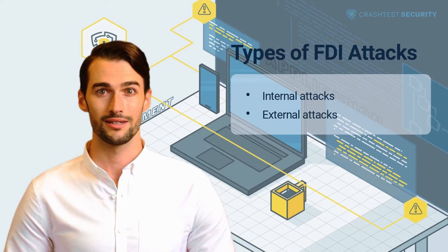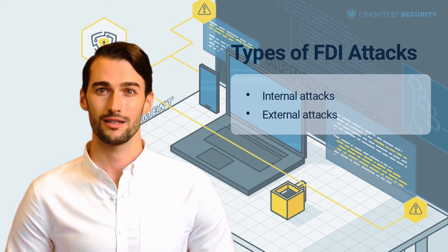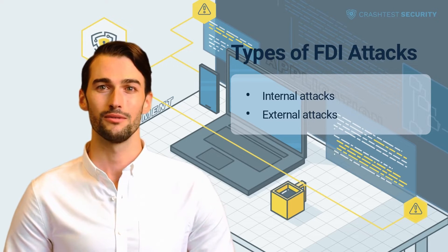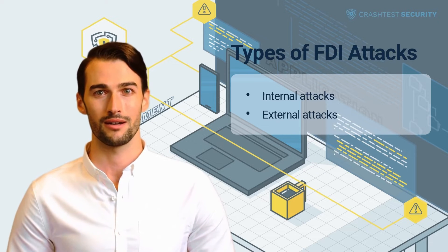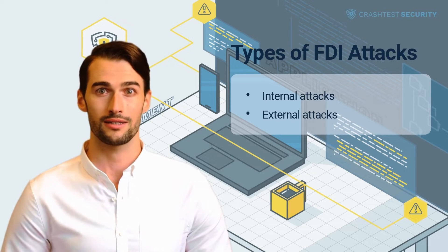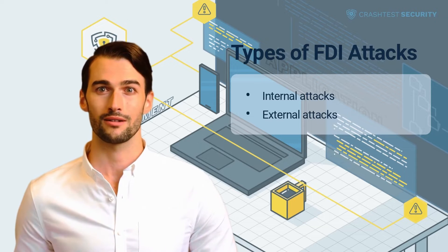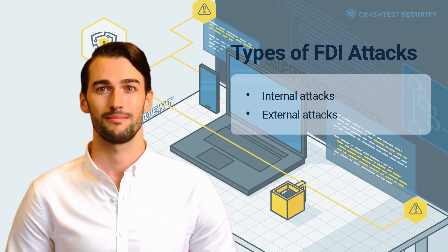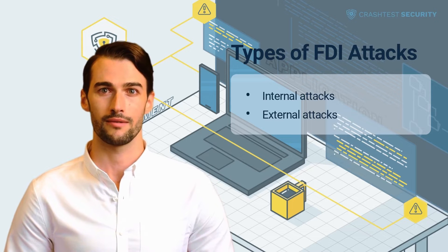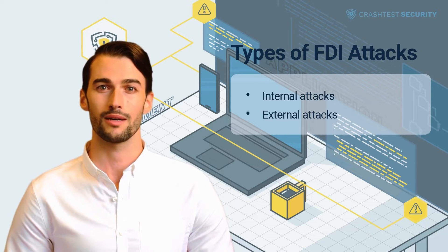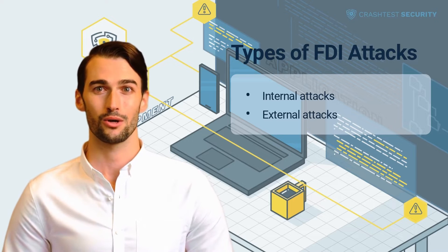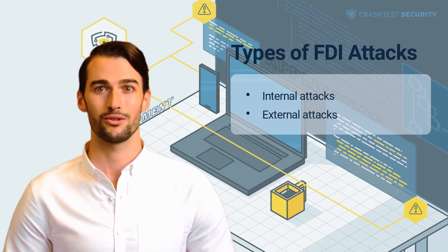An internal FDIA attack is carried out by adversaries who possess precise knowledge of the system's bi-linear pairing operations. An attacker also accurately understands the power system's network topology, capacity, cost function, and standard measurements of the target system. In most cases, the adversary is an internal threat, such as a disgruntled employee or a malicious actor, who can access the power system's historical load data and control devices.